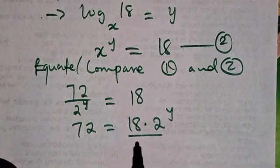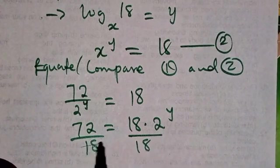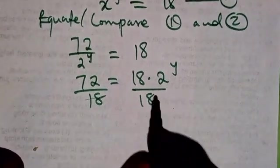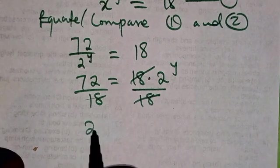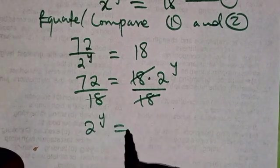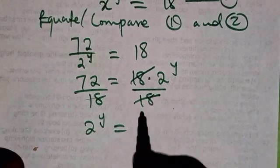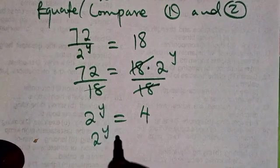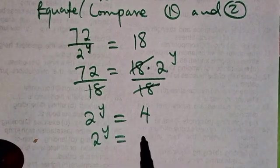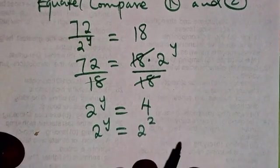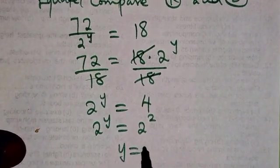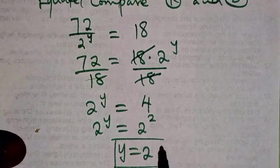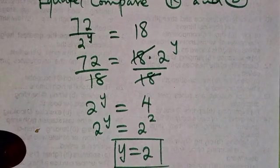Then we divide both sides by 18. We have 2 to power y equals 72 divided by 18, which gives us 4. From here, 2 to power y equals 4. We can write 4 as 2 to power 2. So we have y equals 2.